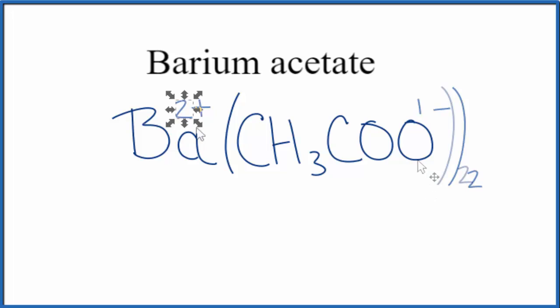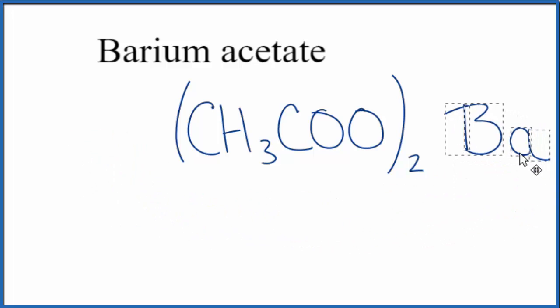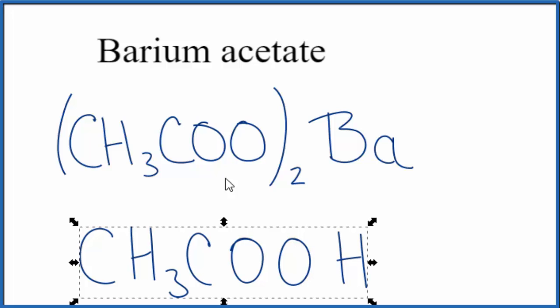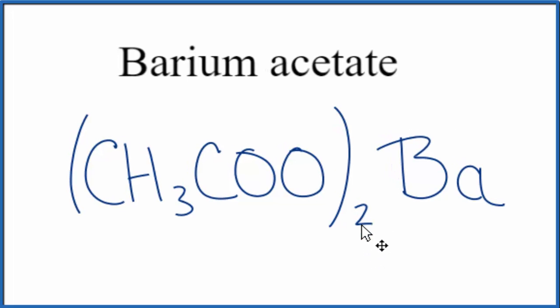Let's remove these symbols here, and this is the formula. Note that sometimes you'll see the barium here after the acetate ion. That has to do with the fact that the acetate ion comes from acetic acid, and acetic acid loses this hydrogen when it bonds. So the barium essentially has replaced the hydrogen here. So this is another way you could write the formula for barium acetate. Either way is acceptable.